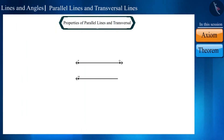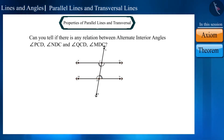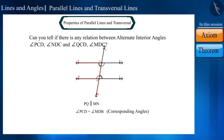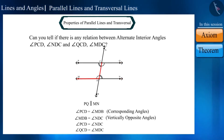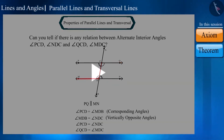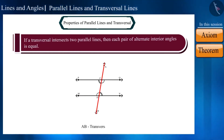What is the relation between alternate interior angles formed by a transversal cutting two parallel lines? Given angle PCD and angle MDB are corresponding angles, they are equal. Angle MDB and angle NDC are vertically opposite, so they are also equal. Therefore angle PCD and angle NDC are equal. Similarly, angle QCD and angle MDC are also equal. We can state this as a theorem: if a transversal intersects two parallel lines, each pair of alternate interior angles is equal.